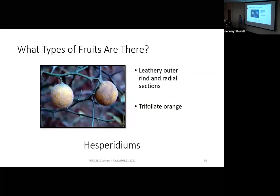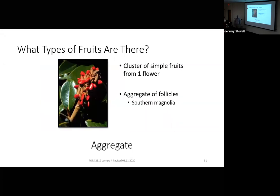Our last fleshy fruit type is pretty straightforward — we all know what an orange is. The term for that fruit is a hesperidium. We'll learn trifoliate orange, an invasive species, as our one example of a hesperidium this semester.